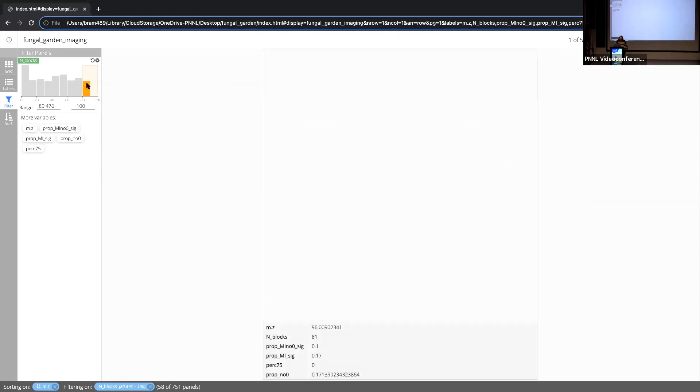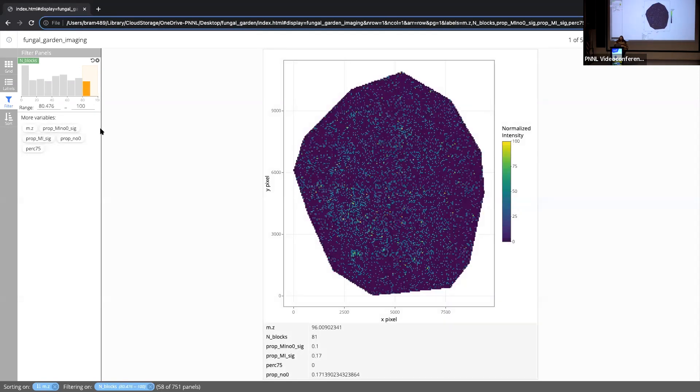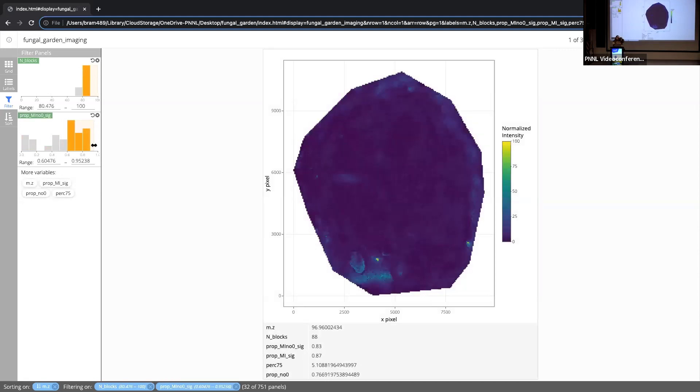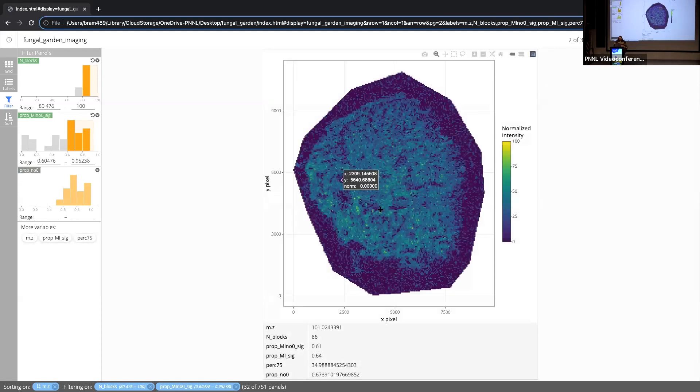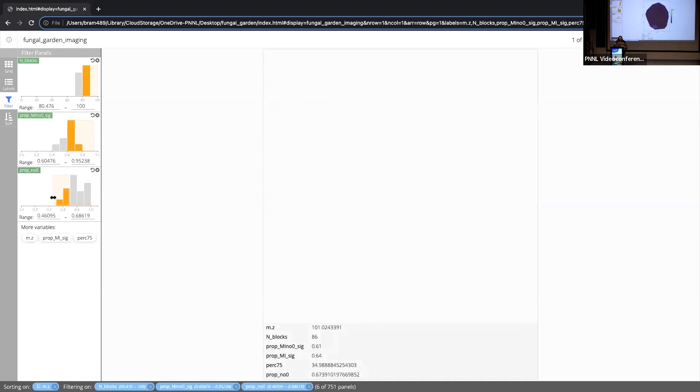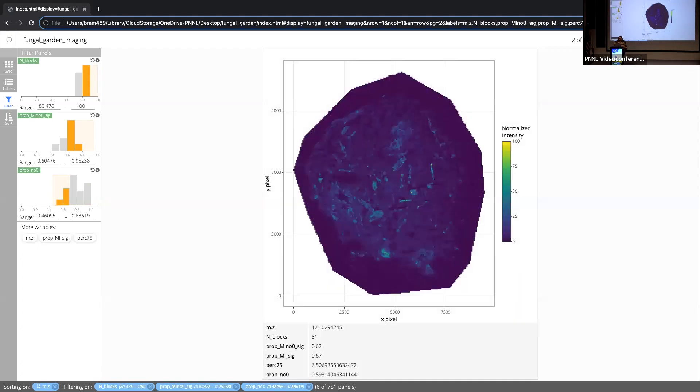And I counted how many of those blocks had intensities greater than zero across them. So basically a metric of how much data is there. I could look and I could come into Trelliscope. It shows me what the distribution of that metric is. I can come in and say, I wonder what this top section with the most blocks with data in them looks like. And I've now filtered down from 751 plots to 58. These are the 58 m over zs that have sort of collectively the most data scattered amongst these particular metabolites. And I might want to dig deeper. And I just calculated a very basic metric of spatial dependence.